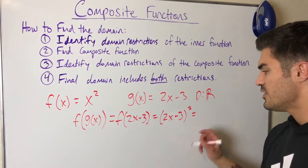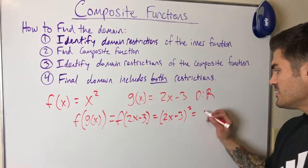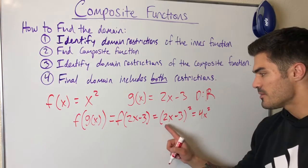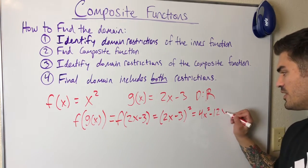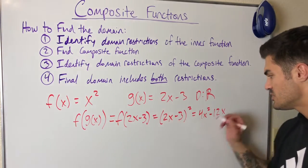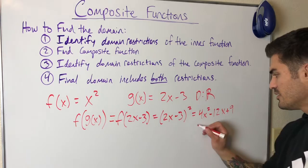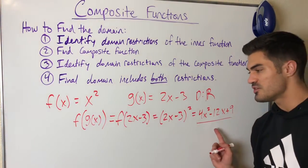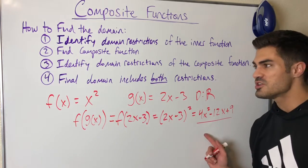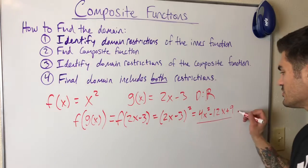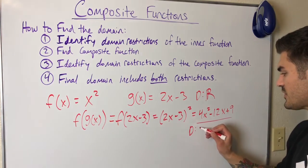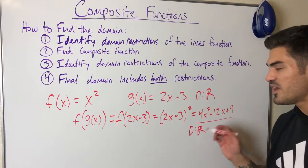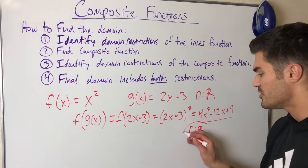Using the shortcut for squaring a binomial: a squared is my first term, 4x squared, plus 2ab which is negative 12x, plus b squared which is 9. Now, are there any domain restrictions in this composite function? There are not, so the domain is all real numbers. We include both restrictions — since we have none either way, our final domain is all real numbers.